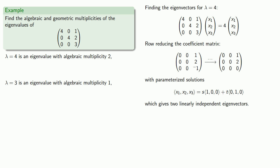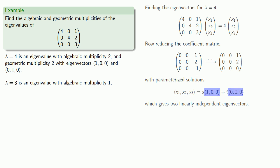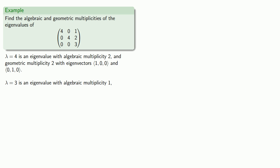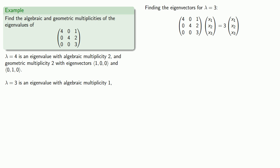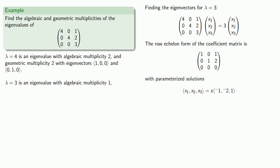So lambda equals 4 has geometric multiplicity 2, with eigenvectors (1, 0, 0) and (0, 1, 0). Similarly, for lambda equals 3, we set up our equation, row reduce the coefficient matrix, and find that the eigenvector is s times (-1, -2, 1). This is the only eigenvector, so lambda equals 3 is an eigenvalue with algebraic multiplicity 1 and geometric multiplicity 1, with eigenvector (-1, -2, 1).